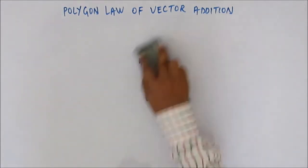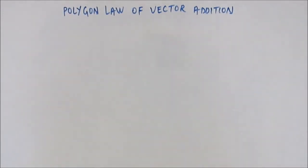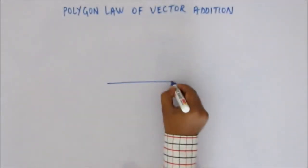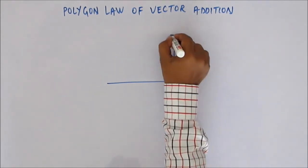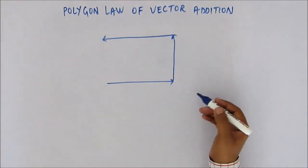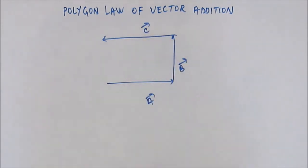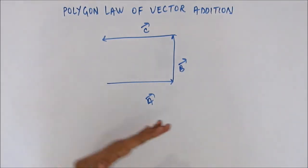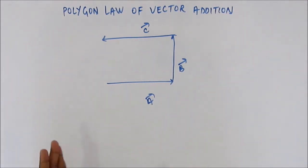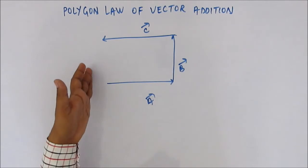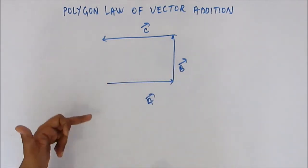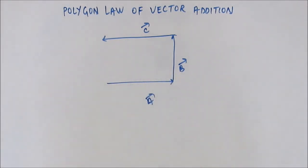Let's solve some problems. Suppose there are three vectors forming three consecutive sides of a rectangle — a, b, and c. Can you draw the resultant of these three vectors? As per the polygon law of vector addition, the sum of three vectors is the fourth side of the polygon taken in the reverse order.